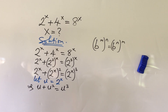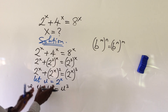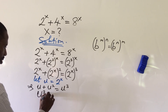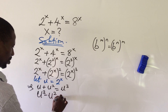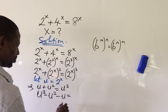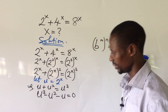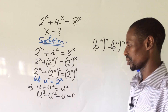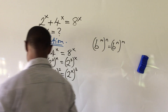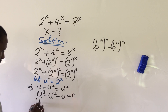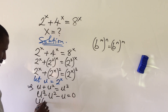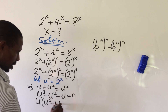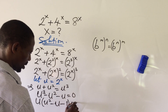All we need to do is rearrange the expression — bring all terms to one side. That gives us u to the power of 3 minus u to the power of 2 minus u to the power of 1, which is the same as u, equal to 0. If you look carefully, u is common in all three terms.